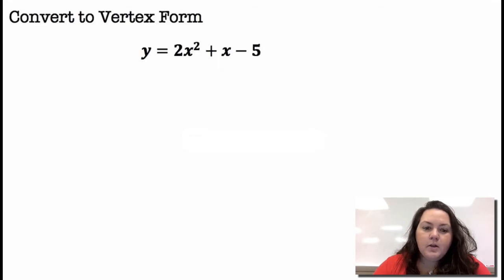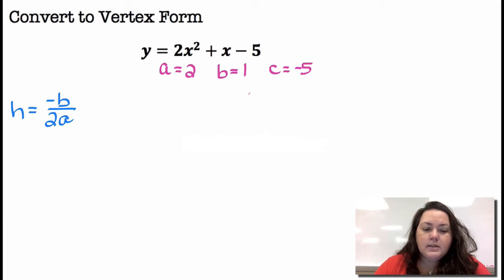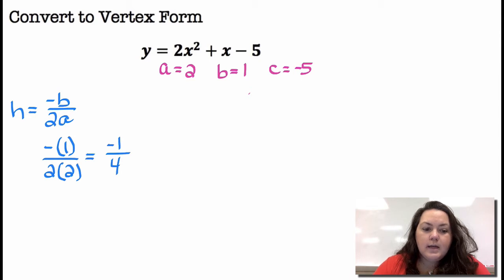We're going to convert this function in standard form to vertex form. I have Y equals 2X² plus X minus 5. So A is 2, B is 1, C is negative 5. First I'm going to find the vertex. It's negative B over 2A, which is our H piece. That's negative 1 over 2 times 2, so negative 1 over 4 is our H.